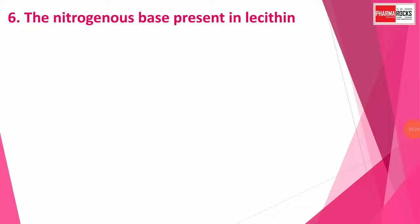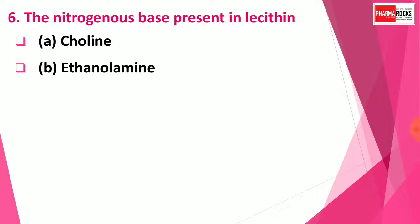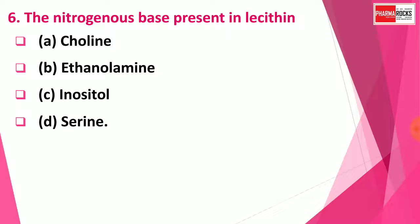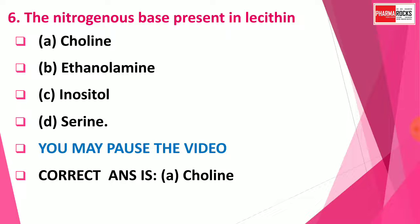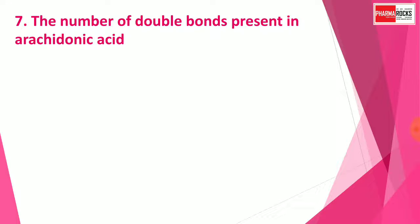Question 6: The nitrogenous base present in lecithin is — Option A: Choline, Option B: Ethanolamine, Option C: Inositol, Option D: Serine. You may pause the video to think about the answer. The correct answer is Option A: Choline. Choline is the nitrogenous base present in lecithin.